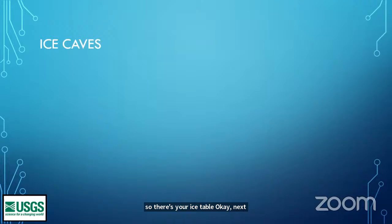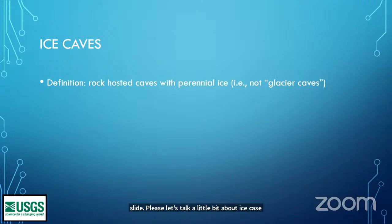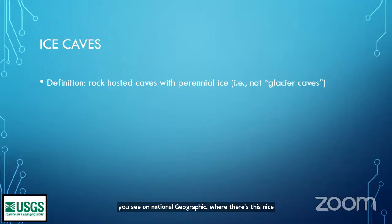Let's talk about ice caves. They're defined as rock-hosted caves with perennial ice — not glacier caves. Glacier caves are those things you see on National Geographic where there's a nice cave going into the side of a glacier with blue light everywhere. That's not what we're talking about. We're talking about rock-hosted caves that have perennial ice.